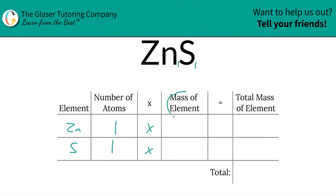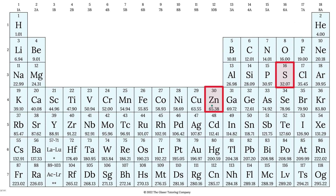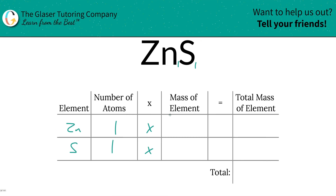Then we're simply going to take those number of atoms and multiply it by the mass of each element from the periodic table. Zinc's mass is going to be 65.38 and sulfur is going to be 32.07. Let's write them in: zinc is 65.38 and sulfur is 32.07.